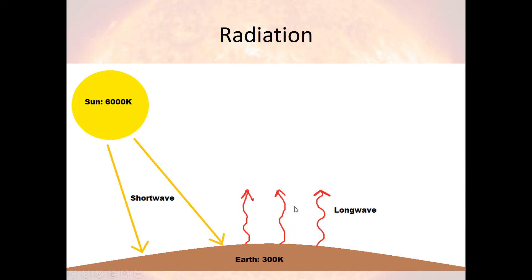What would happen if the sun suddenly became dark and stopped emitting shortwave radiation? Well, the earth, because it has a temperature above absolute zero, is still going to emit longwave radiation. But since it's not receiving any additional shortwave radiation, it results in a net loss — it's losing more than it's gaining. This happens every night, which is why temperatures are cooler at night.